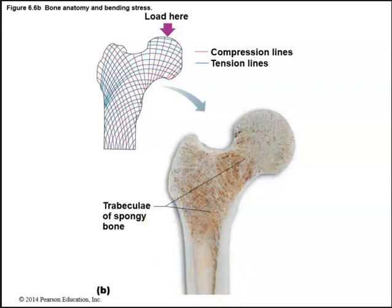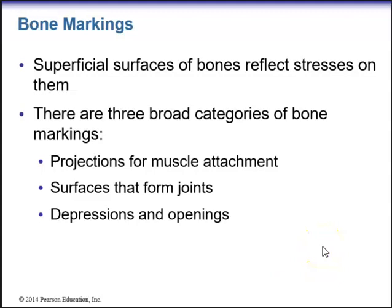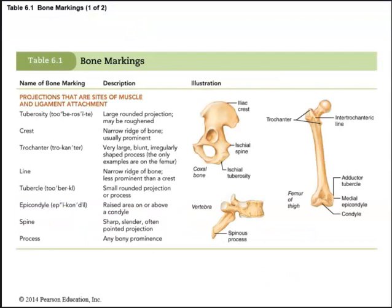Bone markings are superficial surfaces that reflect the stresses on bones. There are three broad categories: projections for muscle attachments, surfaces that form joints, and depressions and openings. You should study table 6.1, which shows all three categories and the specific bone markings within each.